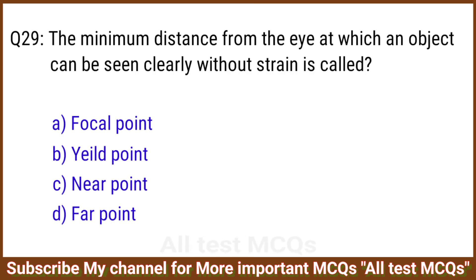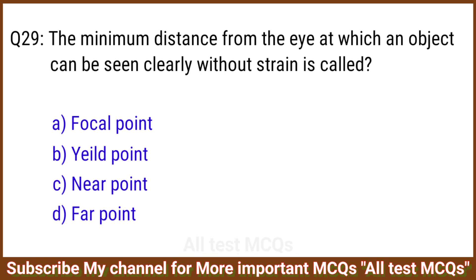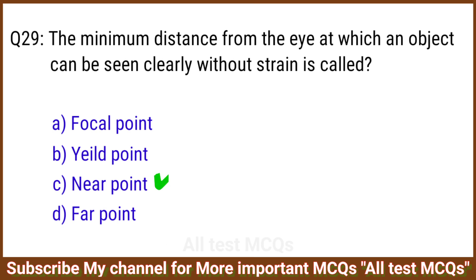Q29. The minimum distance from the eye at which an object can be seen clearly without strain is called? The right answer is option C: Near point.